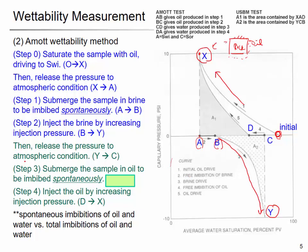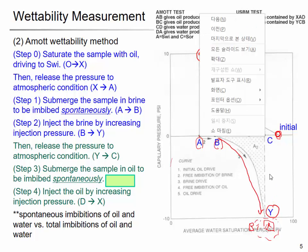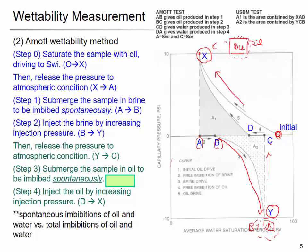Release the pressure to atmospheric pressure again. At this point, the rock core is surrounded by brine and you have a residual oil saturation. Release the pressure and expose the rock core to atmospheric pressure — it becomes state C. Then you place the sample in oil and see if the oil imbibes spontaneously by itself — that is the point from C to D.